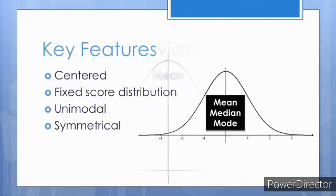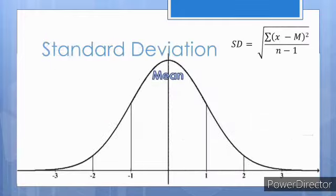Standard deviations are used to measure how much variation exists in the distribution. Low standard deviation means values are close to the mean, whereas high standard deviation means that values are spread out over a large range.